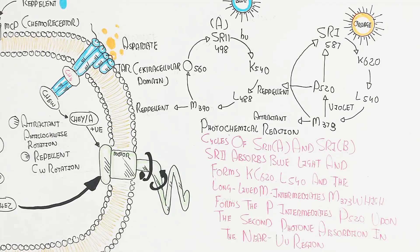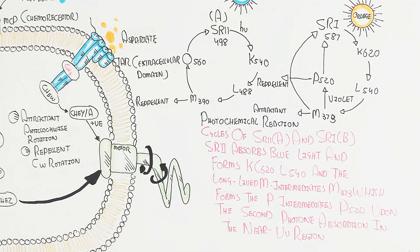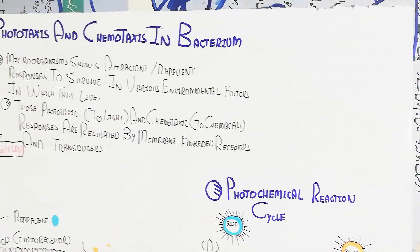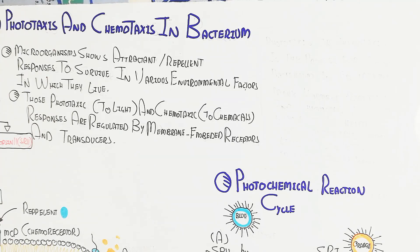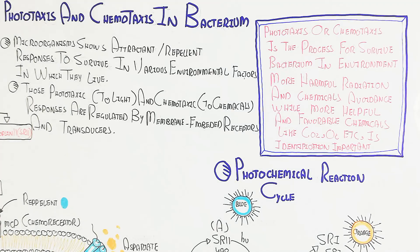What is the benefit of phototaxis and chemotaxis for bacteria? Phototaxis and chemotaxis are processes that help bacteria survive in their environment. They allow avoidance of harmful radiation and chemicals, and movement toward helpful, favorable chemicals like carbon dioxide, oxygen, nitrogen dioxide, and sulfur compounds. Identifying favorable conditions allows bacteria to move toward or away from chemicals based on what is beneficial for them.